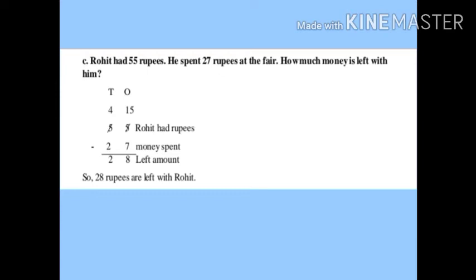5 minus 7 is not possible, so we borrow: it becomes 15 minus 7 is 8, and 4 minus 2 is 2 — so 28 is left. Write the statements: 55 is 'Rohit had rupees,' 27 is 'money spent,' 28 is 'left amount.' Final statement: '28 rupees are left with Rohit.'